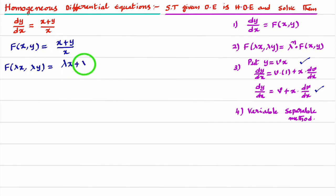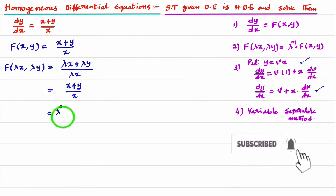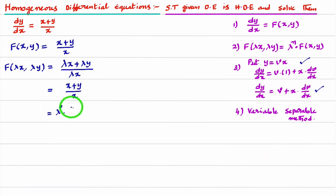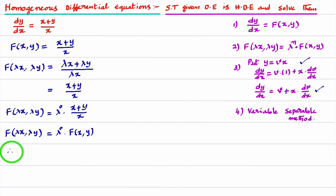So f(λx, λy) = (λx + λy) divided by λx. In the numerator we can take λ common, in the denominator we can take λ common, and both will cancel. What remains is (x + y)/x. The 1 remaining can be written as λ⁰, since λ is a non-zero constant and λ⁰ = 1. So we get λ⁰ · f(x, y). We have identified that f(λx, λy) is in the form λⁿ · f(x, y), so the given differential equation is a homogeneous differential equation of degree 0.